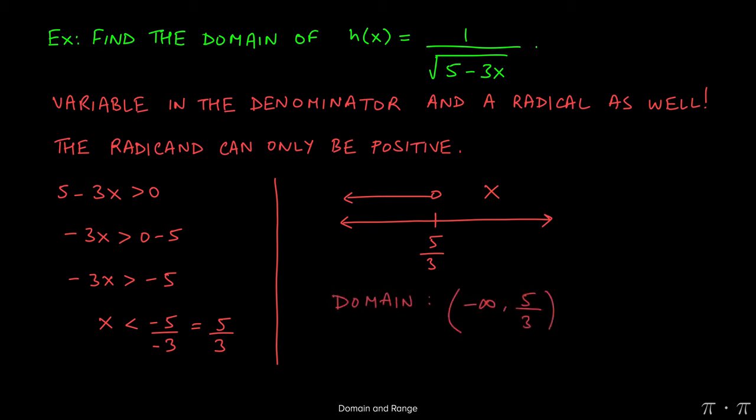Now writing the domain is easy. We look at the intervals from left to right. We start at negative infinity because all the numbers to the left of 5 thirds were in the domain. And then we stop at 5 thirds with a parentheses around it because 5 thirds itself is excluded. And that's it.